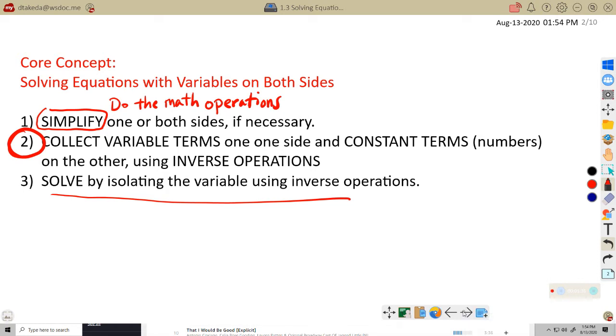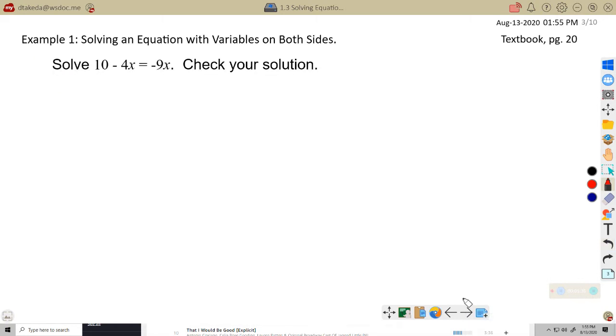Example one, solve an equation with variables on both sides. And we have, I want to rewrite this here a little bit bigger, 10 minus 4x equals negative 9x. So the first thing we want to see is can we do any math? Can we simplify either side? And the answer is we cannot.